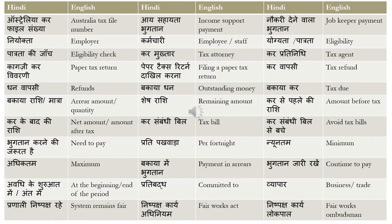'Bakaya rashi ya matra' means arrear amount or quantity. Arrears can mean outstanding or remaining — amounts that have not been paid. So 'bakaya rashi ya matra' is arrear amount. 'Shesh rashi' means remaining amount. 'Kar se pehle ki rashi' means amount before tax.